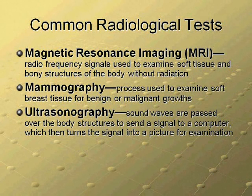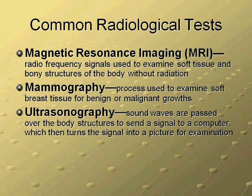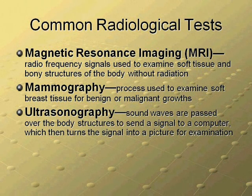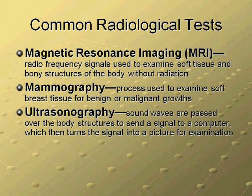Another common radiological test is an MRI. An MRI is the use of non-ionizing radiation to show the body in a cross-sectional view, and allows for observation of soft tissue structures. Codes for MRIs are divided by with, without, or without followed up by with contrast.